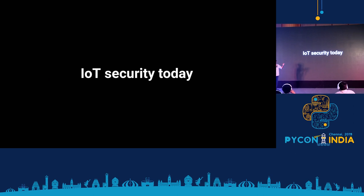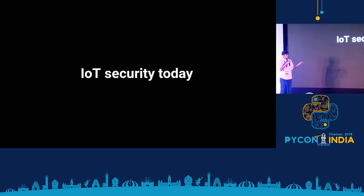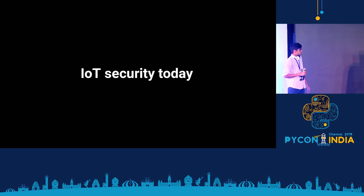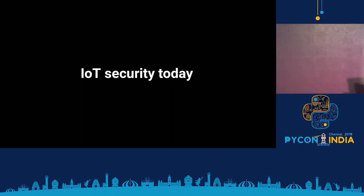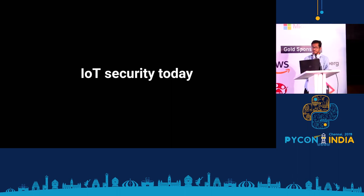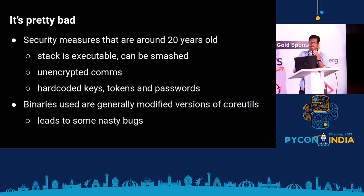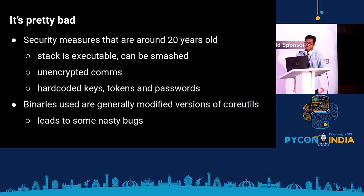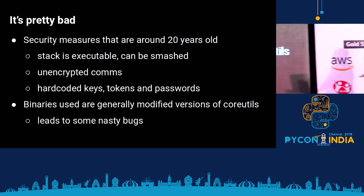Before we get into the lock itself, let's take a quick look at the IoT security scene in general today. We as humans have basically surrounded ourselves with tons of IoT devices ranging from routers, set-top boxes, smart fridges, smart TVs, and whatnot. But when it comes to security, it's pretty bad. The security measures implemented in these devices are over 20 years old.